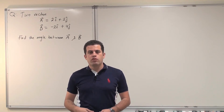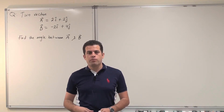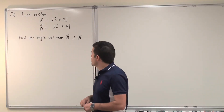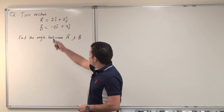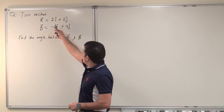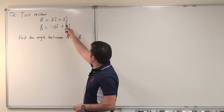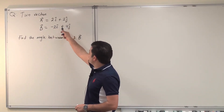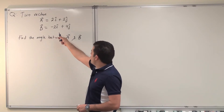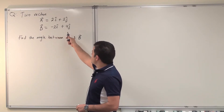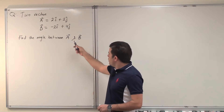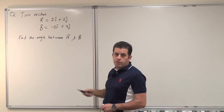As-salamu alaykum. Today we're solving questions from chapter 3, vectors. The question reads: two vectors, A equals 2i hat plus 2j hat, and B equals minus 2i hat plus 4j hat. Find the angle between A and B.